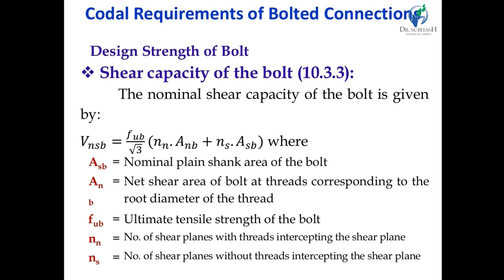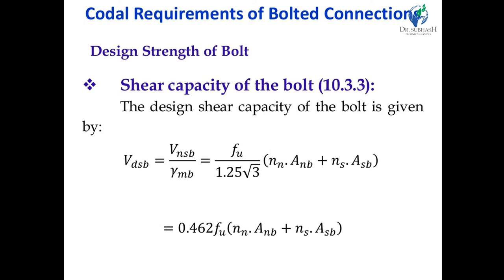Now we calculate our first step: design strength of bolt. The first step is to check the shear capacity of bolt, given in clause 10.3.3 of IS 800. The equation is: VNSB = (FUB / √3) × (NN × ANB + NS × ASB), where ASB is nominal plain shank area (pi/4 × d²), ANB is net shear area at threaded plane (0.78 × pi/4 × d²), FUB is ultimate tensile strength of bolt, NN is number of shear planes with threads intercepting, and NS is number of planes without threading intersecting.